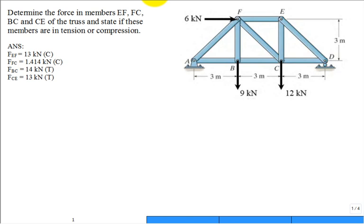We're going to solve this truss problem using the method of sections. The method of sections involves taking the entire truss, cutting a section of it, and using that as a free body diagram. The question is to determine the force in members EF, FC, BC, and CE.